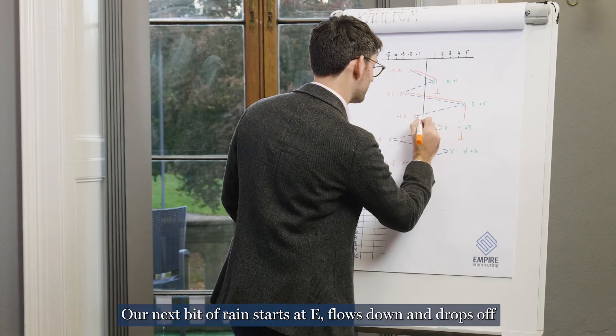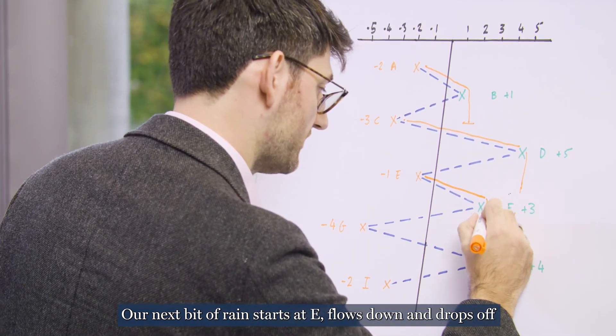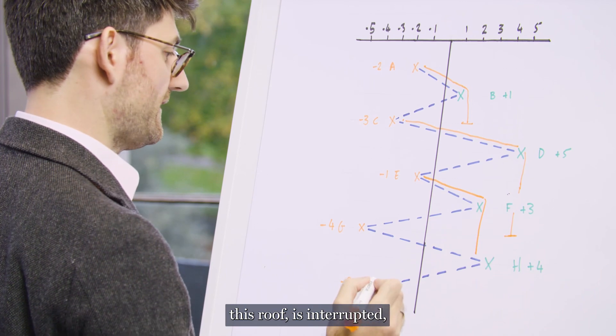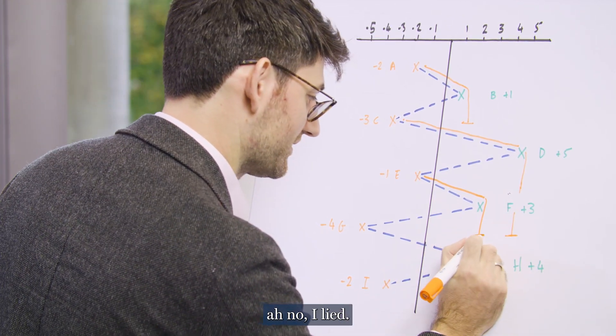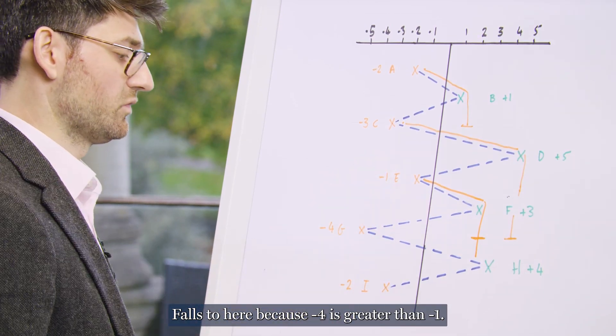Our next bit of rain starts at E, flows down, drops off this roof, is interrupted, falls to here because minus four is greater than minus one.